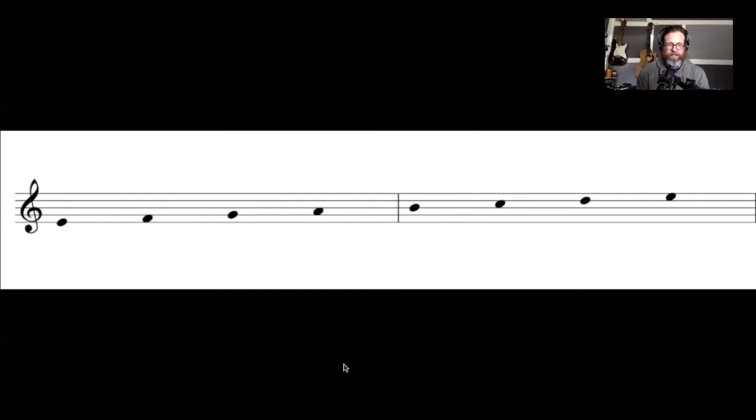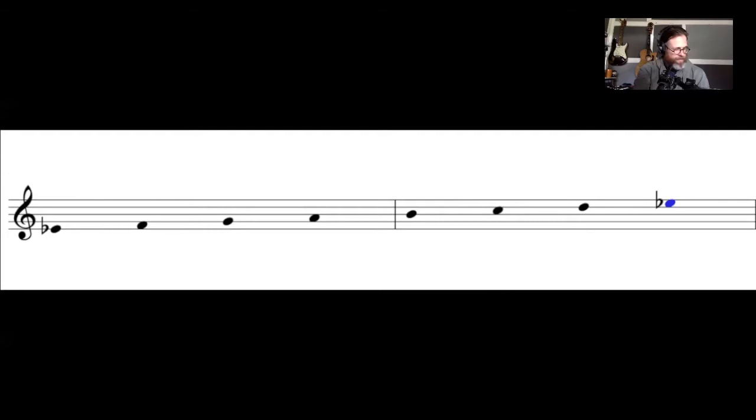So the first step is to write the notes on the staff from E to E, as shown here. Since we're working with the E-flat scale, we want to alter our first and last notes, the tonic, to E-flat, which we do by lowering a half step. Next we're going to go through and add the correct flats to create the major scale sound.